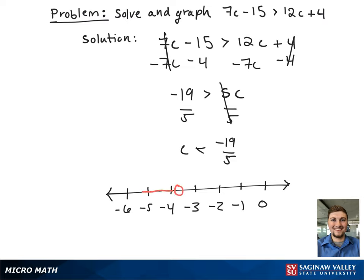So on our number line, this looks like an open circle going left towards infinity because c is less than negative 19 fifths.